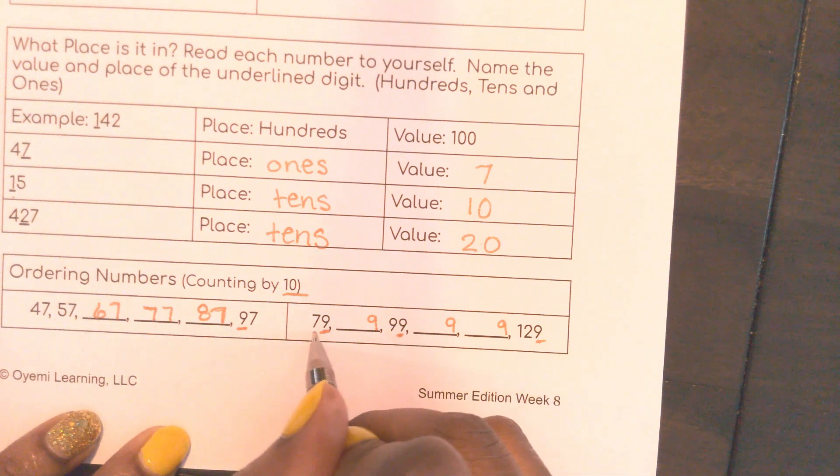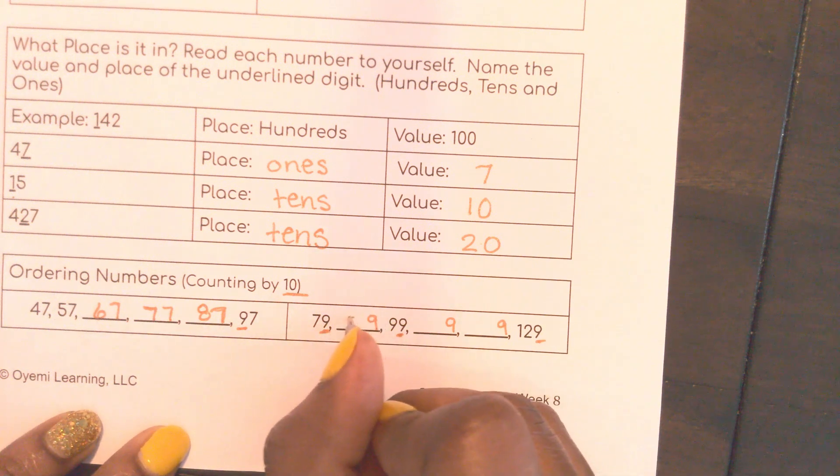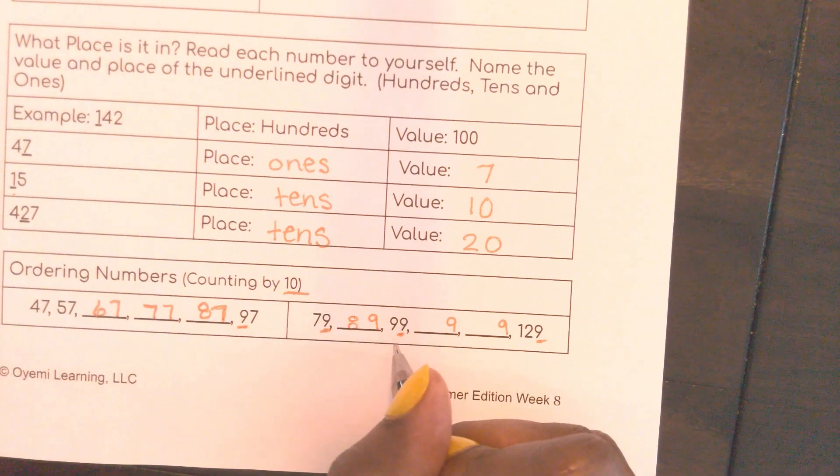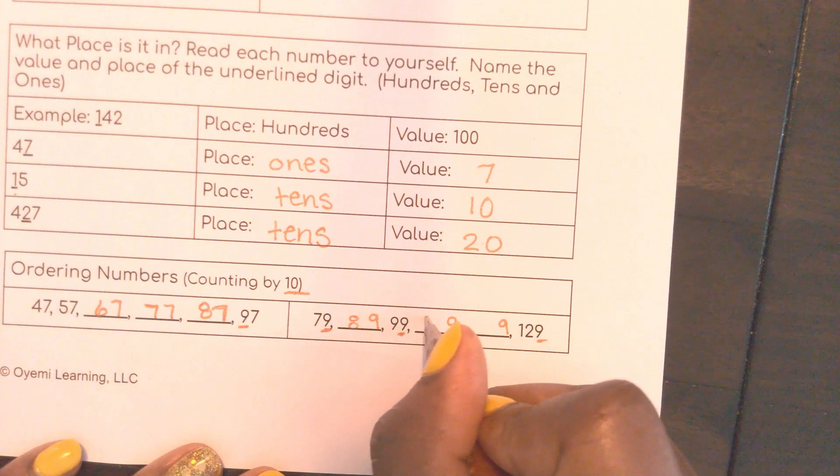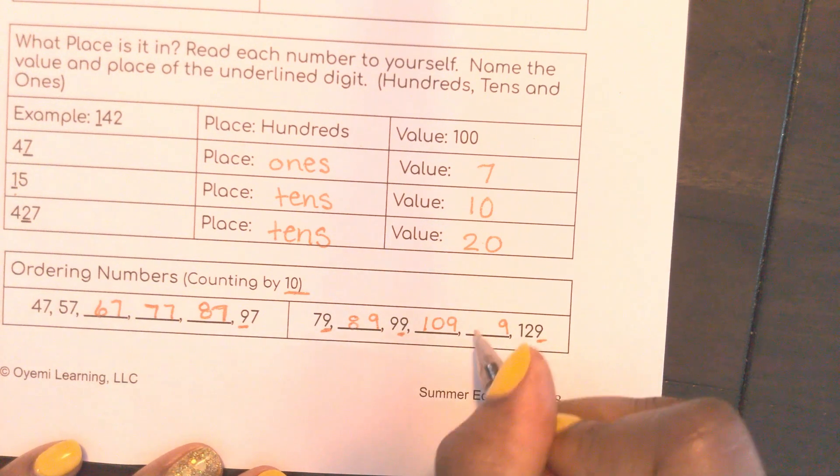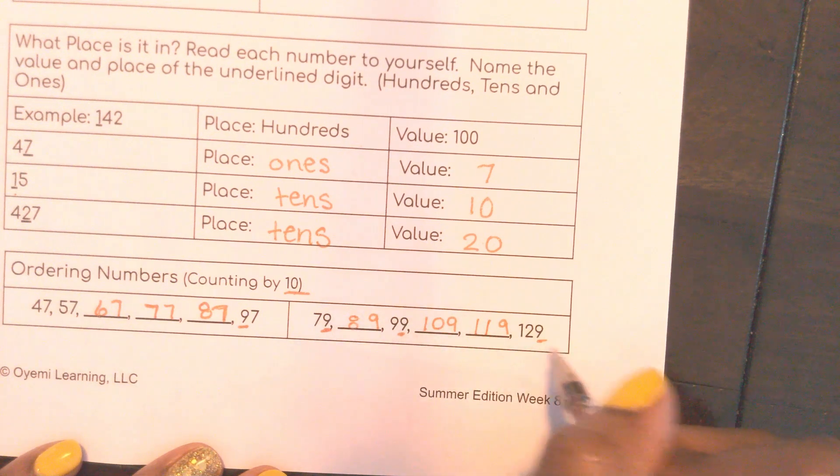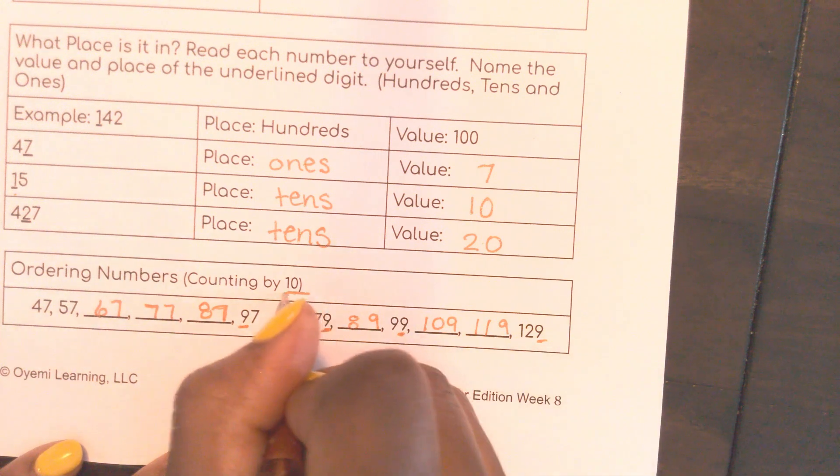So 79, 89. I have 99. So I have to keep going up. This will be 109. Then I have 119. And look, there's 129 counting by 10. Excellent job.